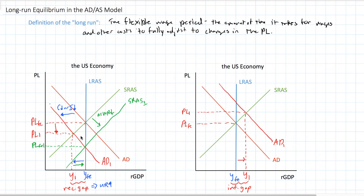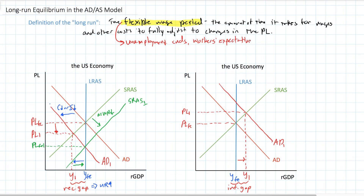Following the decrease in aggregate demand in the short-run, fixed wages require firms to lay workers off. But in the long-run, wages are fully flexible, because the long-run is defined as the flexible wage period. Reasons for flexible wages in the long-run: unemployment benefits and workers' expectations diminish, and workers become more willing to accept lower wages. Flexible wages lead to further deflation, falling input costs, and a recovery in output from the recessionary level of Y1 to the full employment level of YFE.